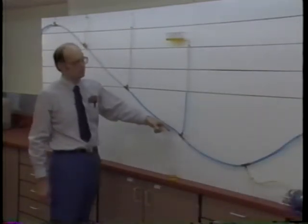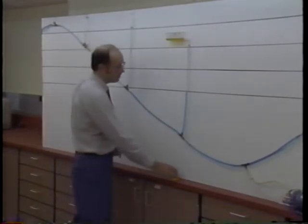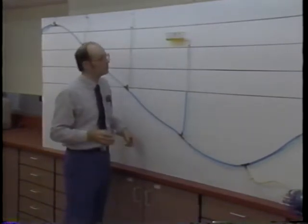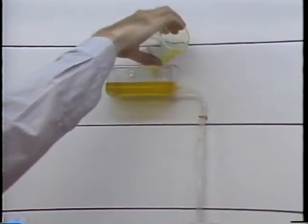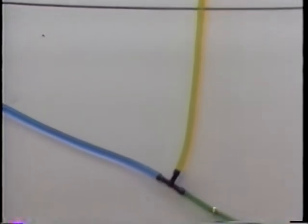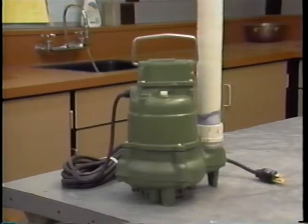The blue water represents effluent continuously flowing through the sewer. This yellow water represents effluent from a single septic tank. The effluent doesn't back up into the septic tank, and it passes through the low point and beyond. If a septic tank is below the sewer, its effluent can be discharged into the sewer by a small pump. An effluent pump like this one costs only about 60 cents a month to operate.